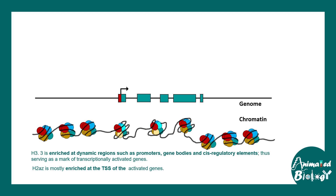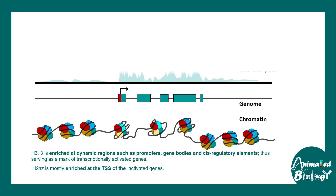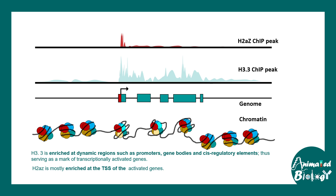So what we've learned so far is that histone variants H3.3 and H2A.Z are mostly associated with activated genes. H3.3 can be found in several regions like promoters, gene bodies, and cis-regulatory elements, whereas H2A.Z is mostly found in the promoter region at the transcription start site. Looking at the ChIP-seq profile of H3.3 and H2A.Z, one can clearly appreciate that at the transcription start site there is a mark for both H3.3 and H2A.Z.